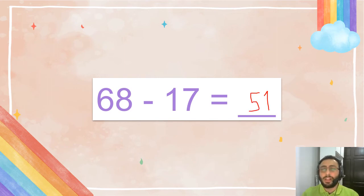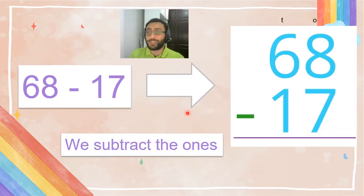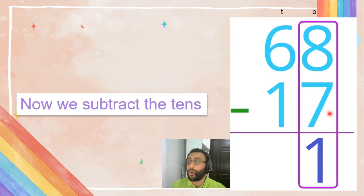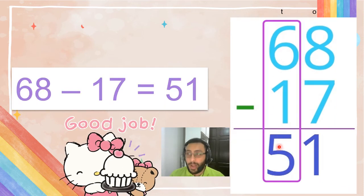Easy. But let's say, oh, today you cannot do it in your head, so we use the column form just like this one. So we subtract the ones as always: 8 minus 7 equals 1. Now we subtract the tens: 6 minus 1 equals 5. So the answer is 51.